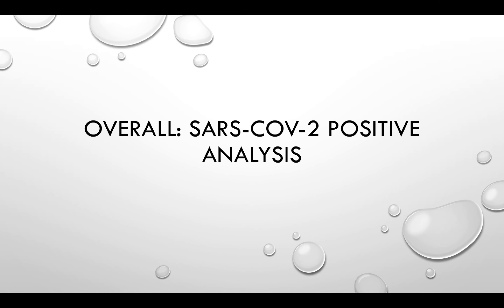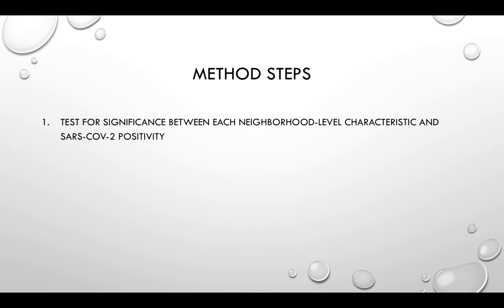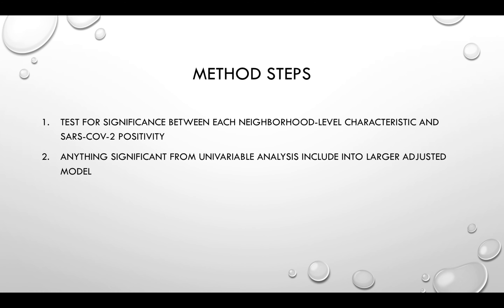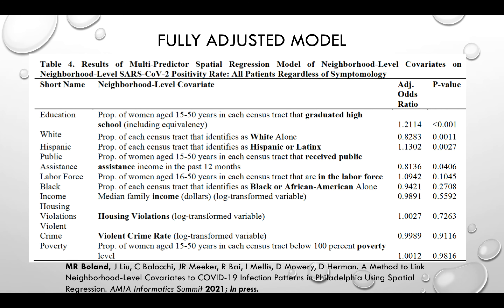We first looked at all patients together to assess SARS-CoV-2 positivity and how it related to neighborhood-level characteristics. Our first step was to test for significance between each neighborhood-level characteristic and SARS-CoV-2 positivity individually, yielding odds ratios and p-values. Many were significant in the univariable setting. We then took anything significant and included it in a larger fully adjusted neighborhood-level factor model, which pulled out the factors most correlated with SARS-CoV-2 positivity at the neighborhood level.